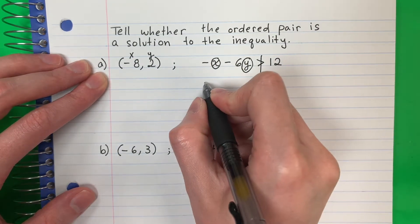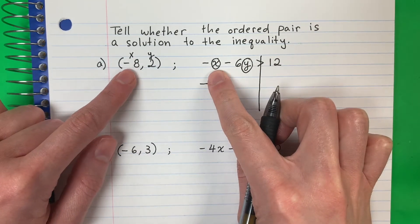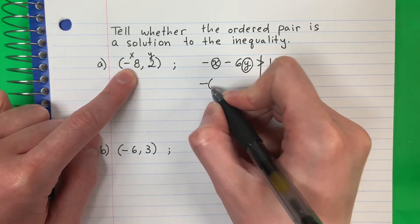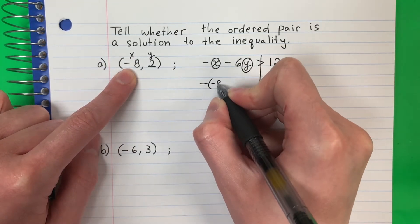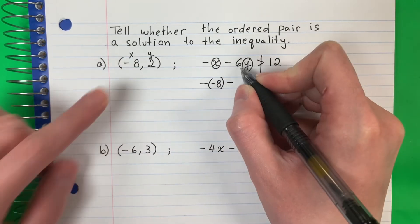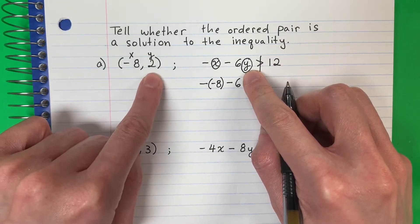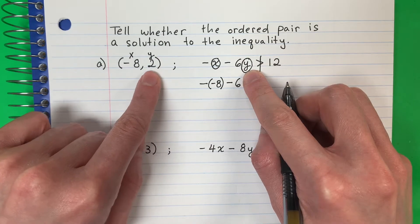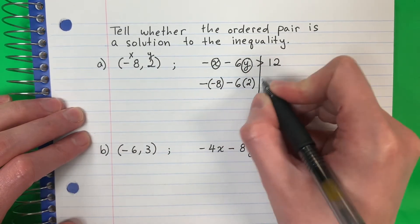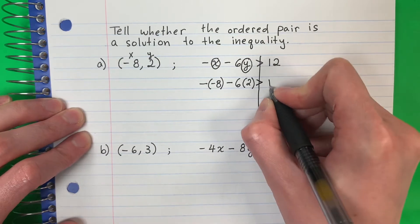So I'm going to copy negative. X, I'm going to put negative 8 in parentheses. Parenthesis, negative 8, parenthesis, copy minus, copy 6. Y, I'm going to change it — y is 2. I'm going to put it in parentheses. Parenthesis 2, parenthesis, copy greater than — mayor que — copy 12.